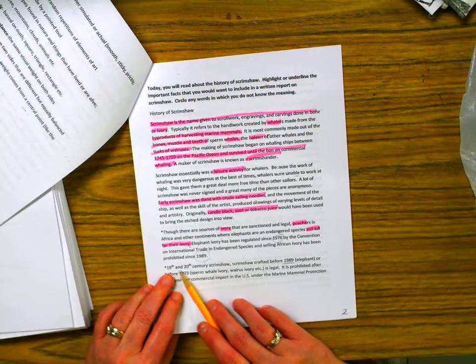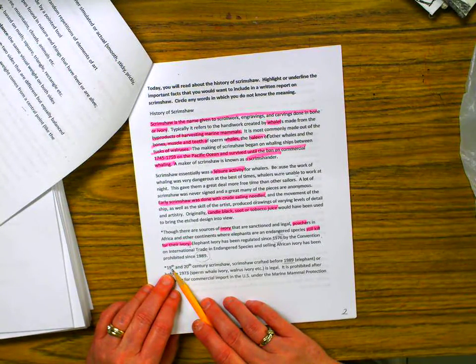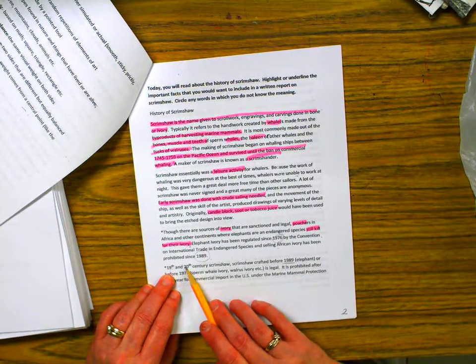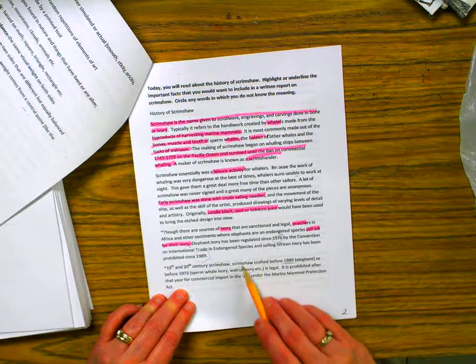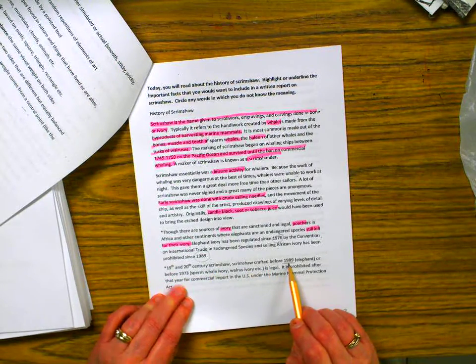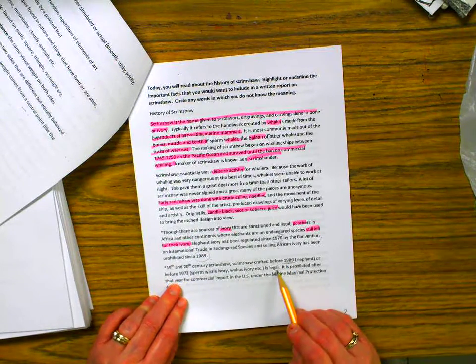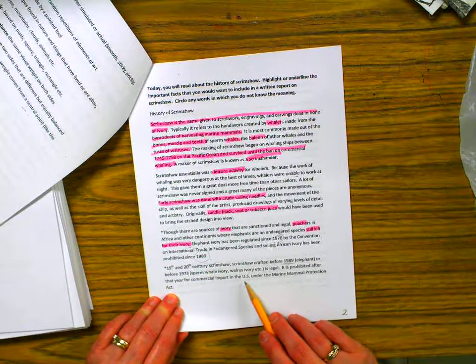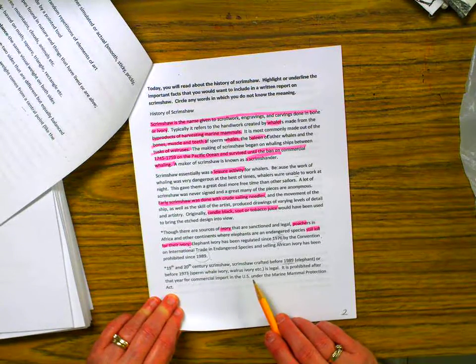When it says 19th century, what years are that? 1800s. It's always the 100 years previous. So 1800s and 1900s, scrimshaw. Scrimshaw crafted before 1989 or before 1973 is legal. It is prohibited after those years for commercial import in the U.S. So it's not that long ago that it became illegal.